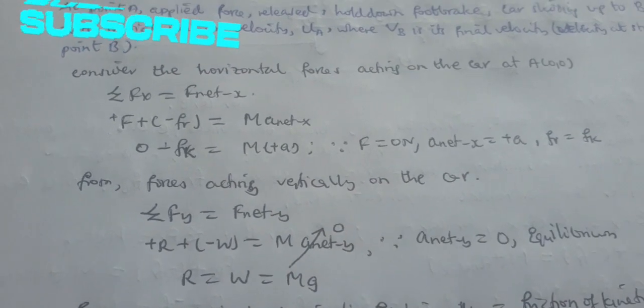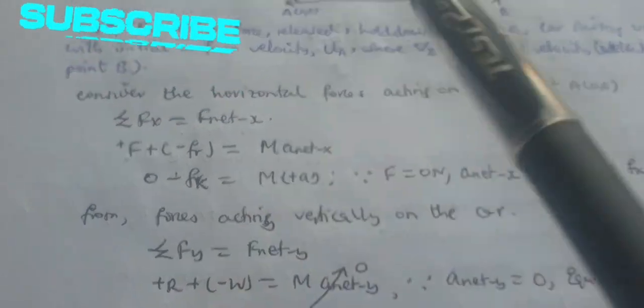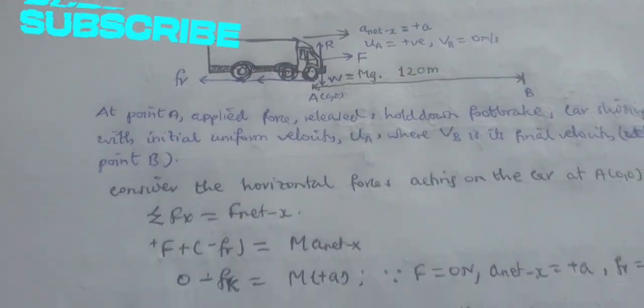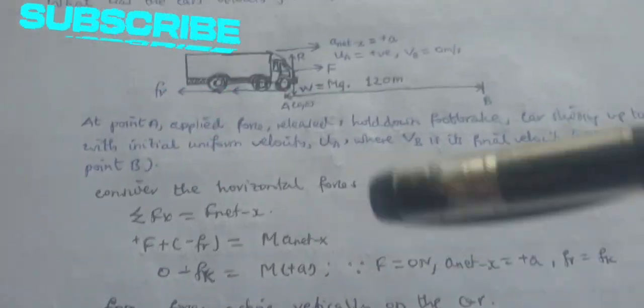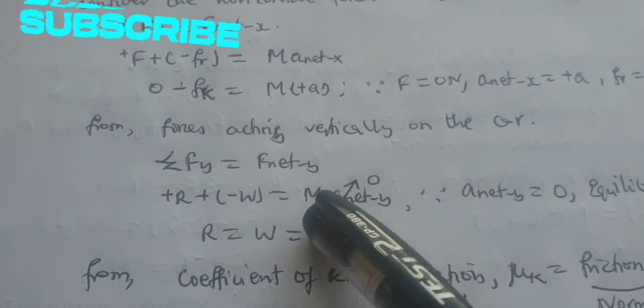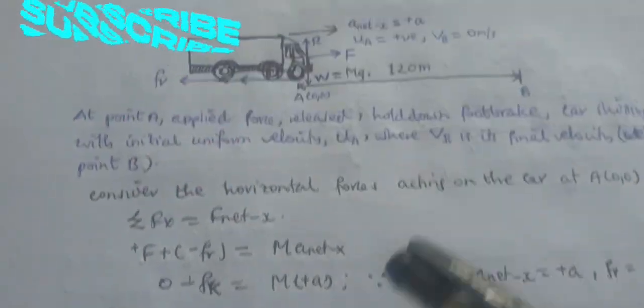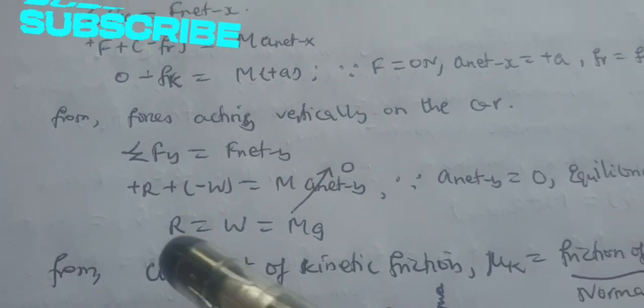From the forces acting vertically on the car, we know that the normal reaction R will be positive acting upwards, and our weight W is negative as it acts downward from frame of reference A. The net acceleration in y direction equals zero because there is no vertical motion.